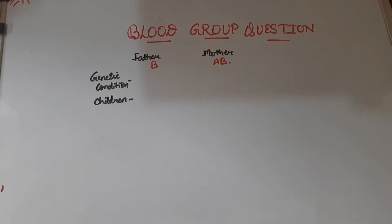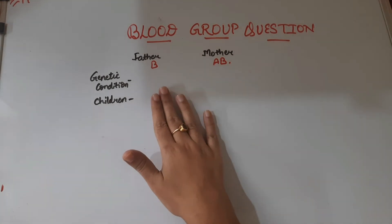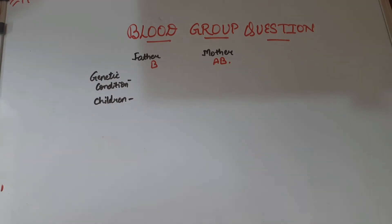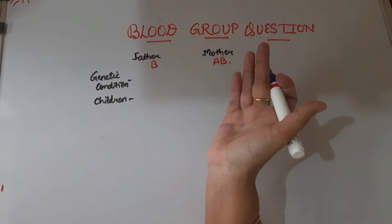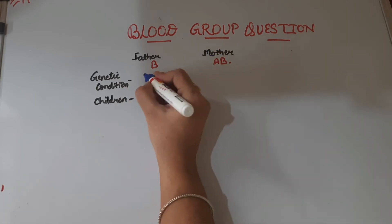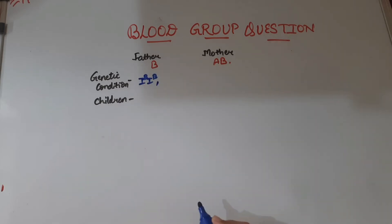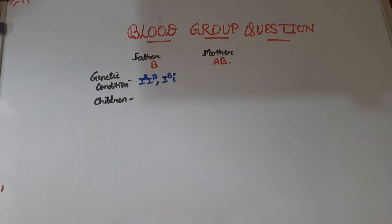To solve such questions, we first have to figure out what the genetic condition of the father and the mother is with respect to their blood groups. We know that if a person belongs to blood group B, there are two types of genetic conditions they can have. The first is the homozygous condition which is IBIB, or the person can have a heterozygous condition which is IB and i.